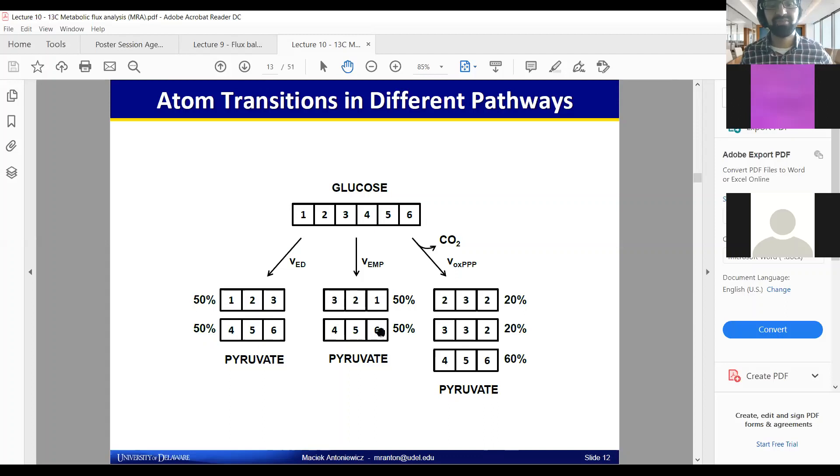Maybe you're asking how can you tell apart 3-2-1 from 1-2-3? Well, these carbons are still attached to other things in all these molecules, so these are not symmetric. They would be distinguishable. Here what's interesting is if it goes through an oxidative pentose phosphate pathway, you end up with this signature.